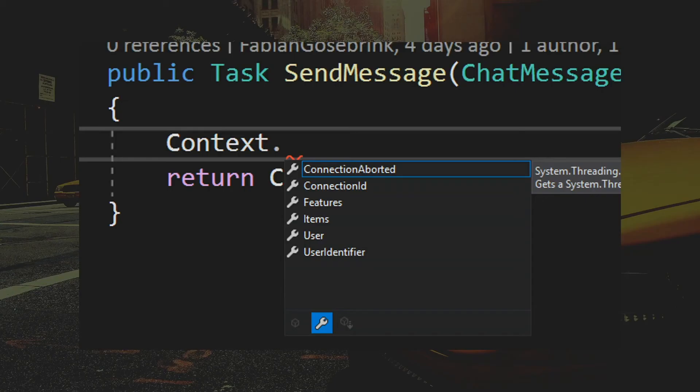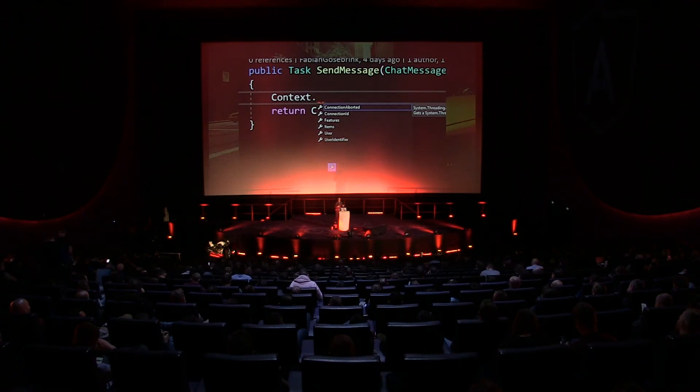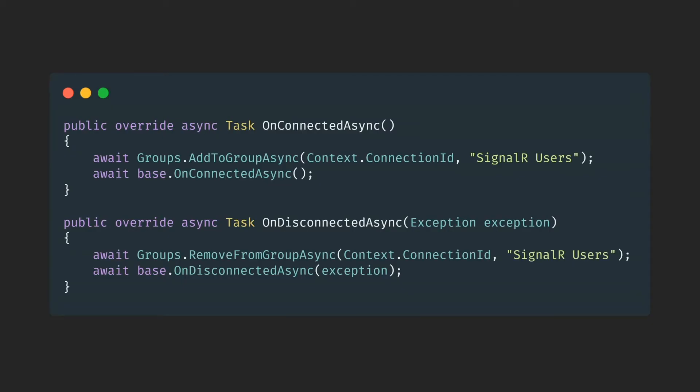You also have a Context property where all user information lives — like user identifier, the user, the connection ID, whether the connection is aborted, and so on. We also have events so that when somebody connects to your hub, you can throw an event and say Fabian joined the chat or Fabian left the chat. But sometimes you don't want to go through a hub — sometimes an update or broadcast should be a side effect of maybe a POST method or a DELETE method.